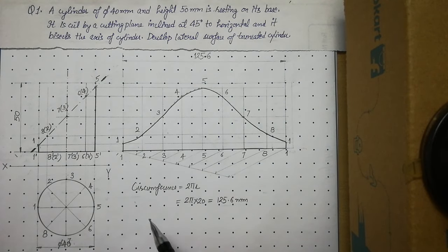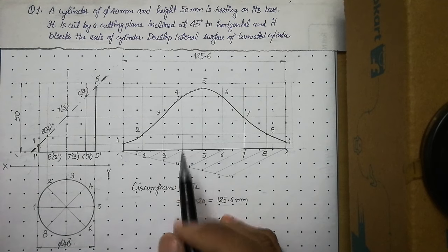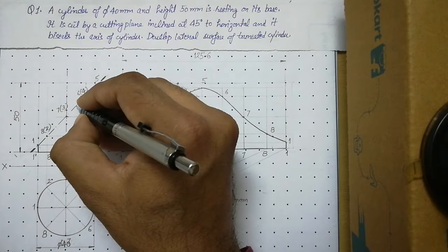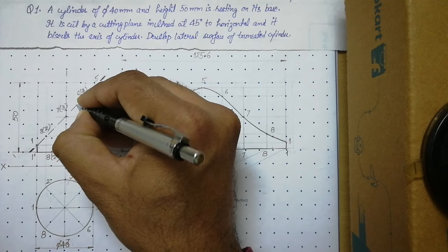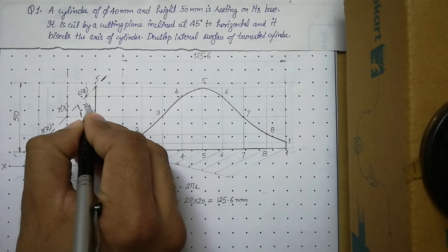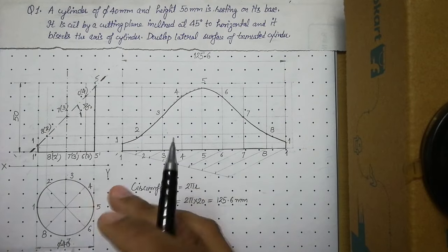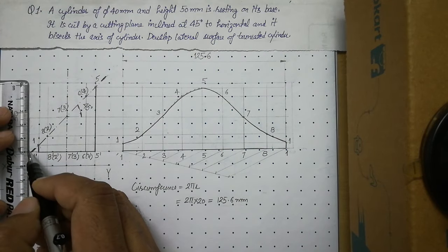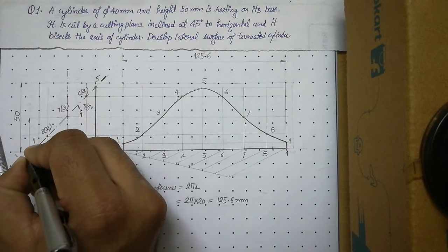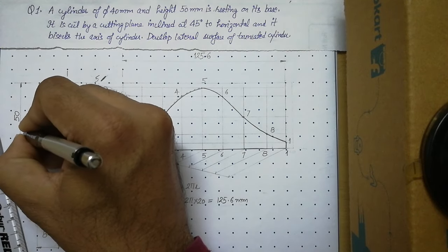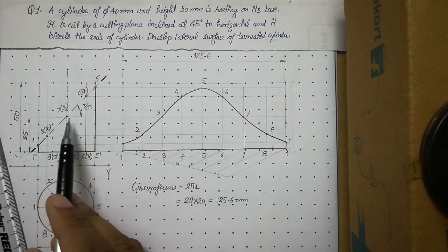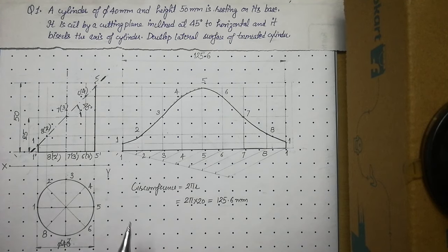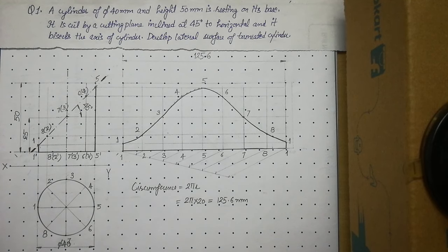There are two more dimensions to add. First, show the angle of the cutting plane — place a dimension indicating the cutting plane makes 45 degrees with the horizontal. Second, show the position of the cutting plane: draw a thin extension line and add a dimension showing that the cutting plane passes through the midpoint of the axis, which is 25mm. I hope this procedure is clear. Thank you very much.